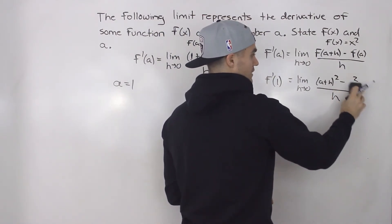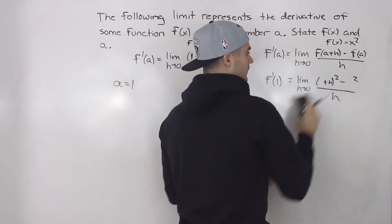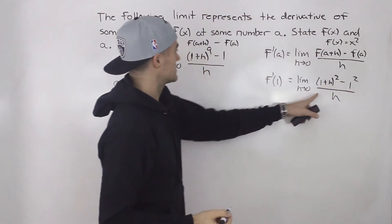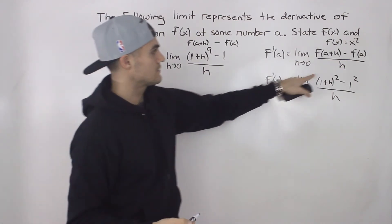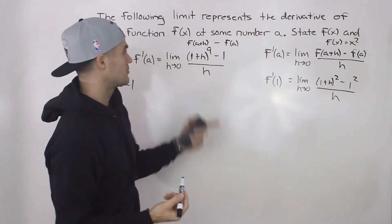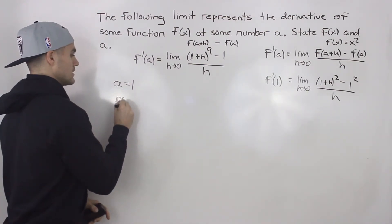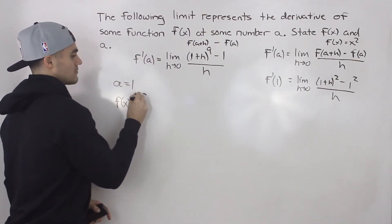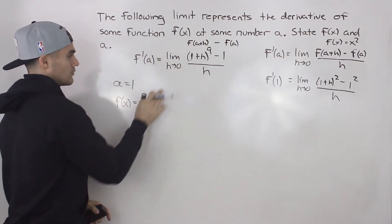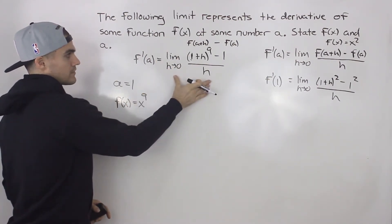Notice that this is very similar to this, but instead of to the power of 2, we got to the power of 9. So we can be pretty confident that the function that we are working with is x^9. That is what we're finding. We're finding the derivative of this function with this limit here.